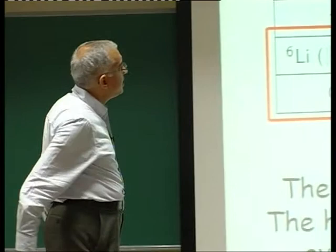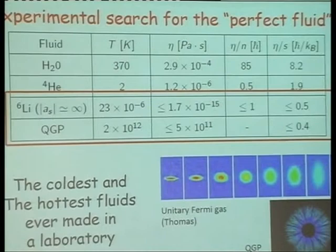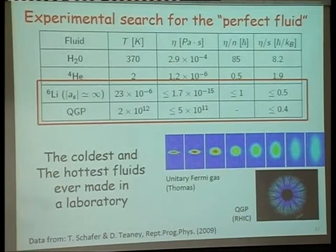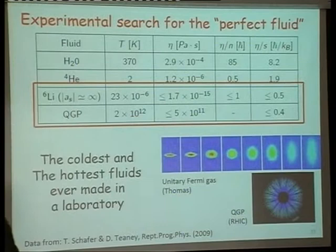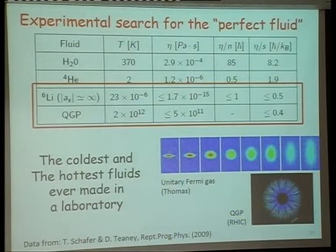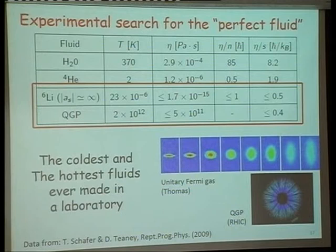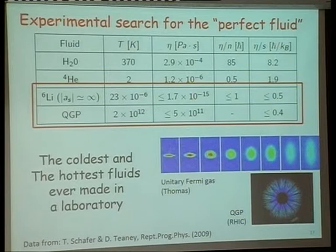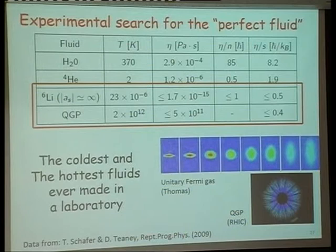Here is a list of eta, eta over N, and eta over S for a variety of systems: water, helium-4, et cetera. What is quite remarkable, and I think not particularly well understood, is that the two fluids that come closest to saturating the string theory bound are the hottest fluid ever made on this earth, the quark-gluon plasma, and amongst the coldest fluid ever made in the lab. The temperature differs by 18 orders of magnitude. The shear viscosity differs by 16 orders of magnitude. Yet those ratios are very close together. Somehow, these are very strongly interacting states of matter, and I will, of course, focus on this one.